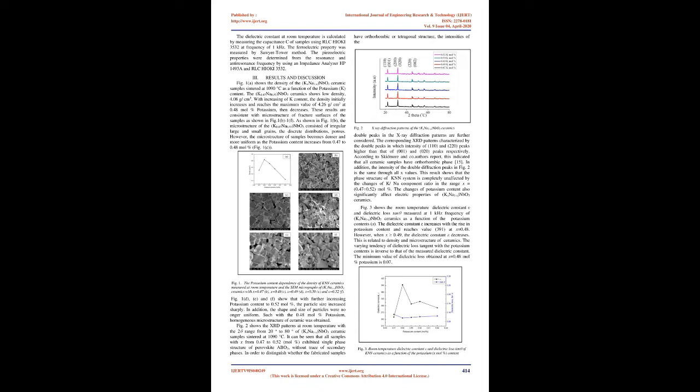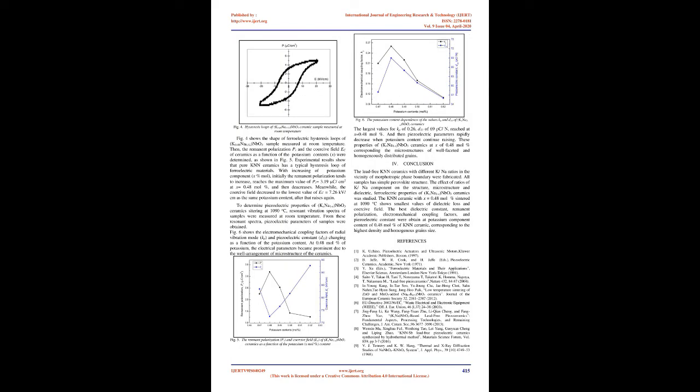3. Results and Discussion. Fig.1 shows the density of the K(X)NA(1-X)NBO3 samples sintered at 1090°C as a function of the potassium content. The K0.47NA0.53NBO3 ceramic shows low density of 4.08 g/cm³. With increasing K content, the density initially increases and reaches the maximum value of 4.26 g/cm³ at 0.48 mol percent potassium, then decreases. These results are consistent with the microstructure of fracture surfaces of the samples as shown in Fig.1(B–F).